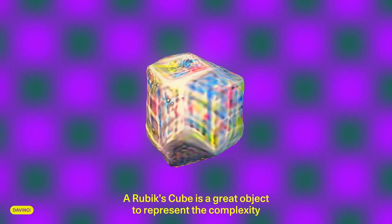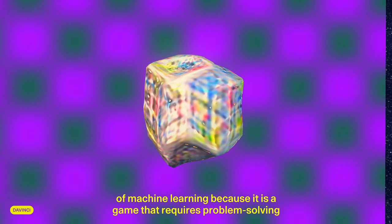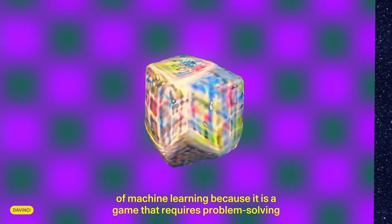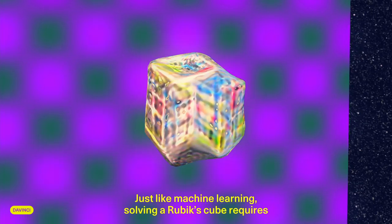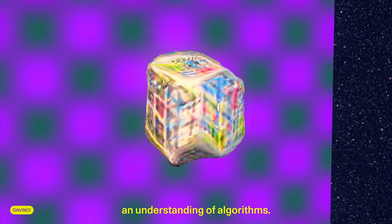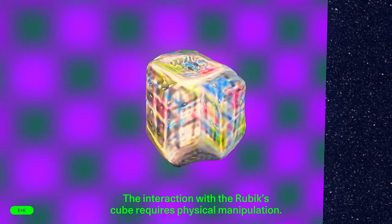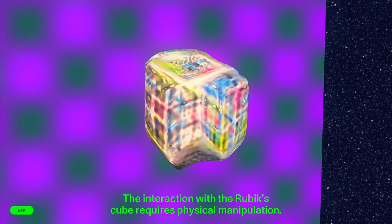A Rubik's Cube is a great object to represent the complexity of machine learning because it is a game that requires problem-solving skills and analytical thinking. Just like machine learning, solving a Rubik's Cube requires an understanding of algorithms. The interaction with a Rubik's Cube requires physical manipulation.